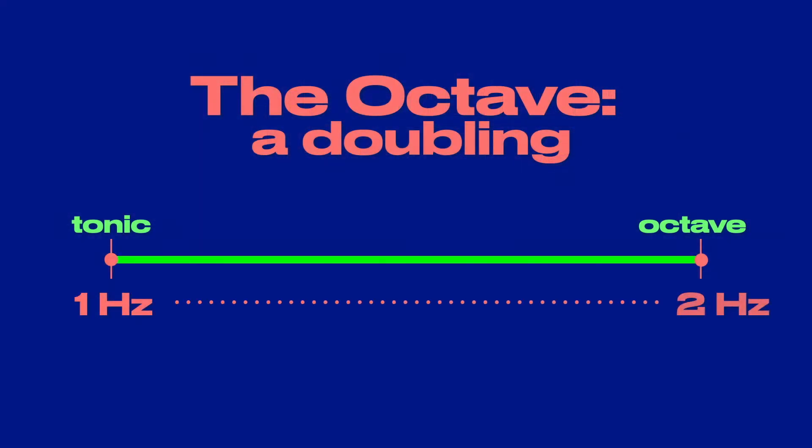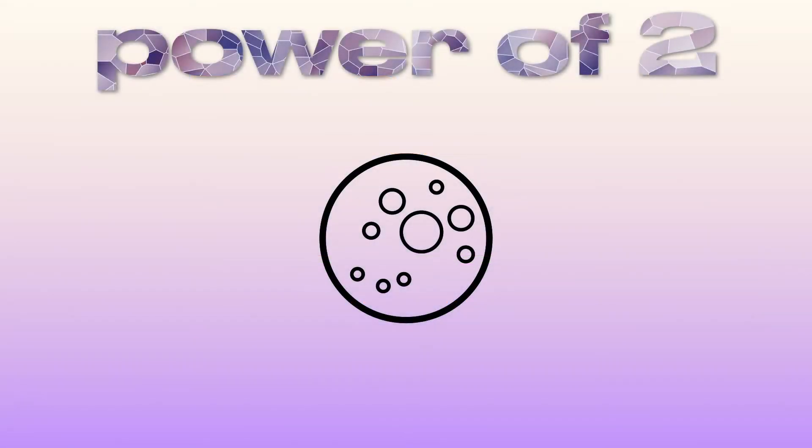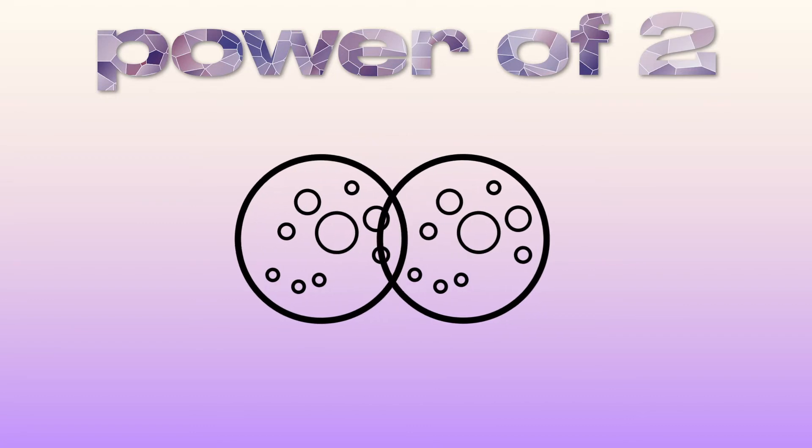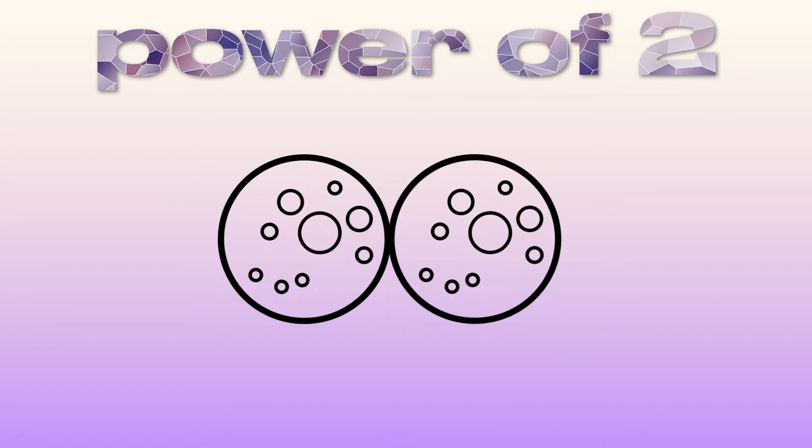An octave is a doubled frequency. A scale's tonic note is always half of its resolving doubled frequency, or put another way, the octave note's frequency is always twice the value of its tonic note. All octaves are based on the doubling power of two. The power of two drives energy in the material world.